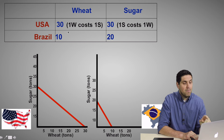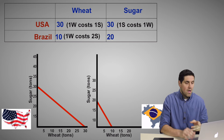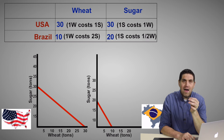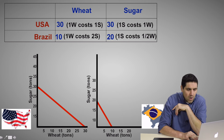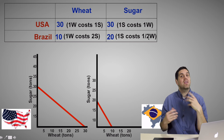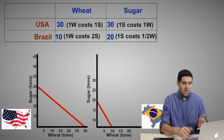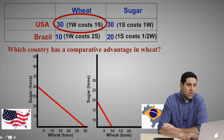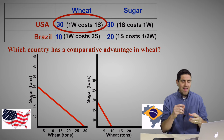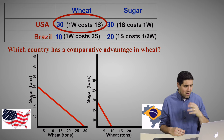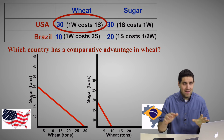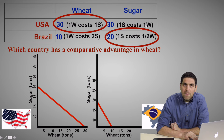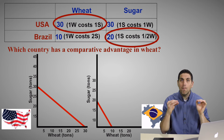Now that we have the per-unit opportunity costs, we can figure out comparative advantage by finding who has the lower opportunity cost. Which country should produce wheat? The United States — it only costs them one sugar, compared to Brazil where it costs two sugars. On a test question, you can't have a comparative advantage in both goods. So if you find that the U.S. has a comparative advantage in wheat, you know for a fact that Brazil has the comparative advantage in sugar. The point is: to figure out comparative advantage, you've got to calculate per-unit opportunity cost.